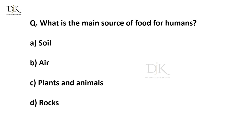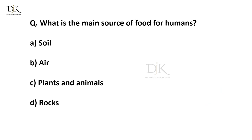What is the main source of food for humans? Right answer is plants and animals.